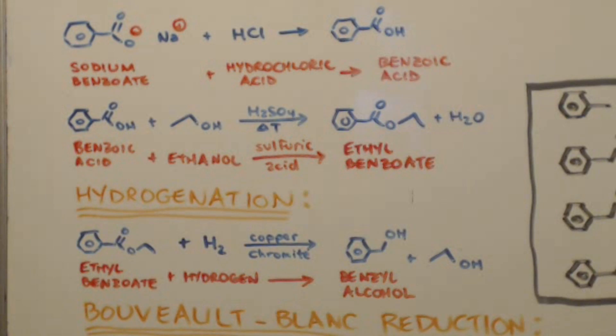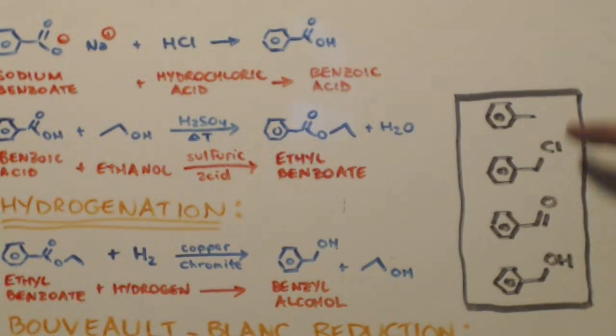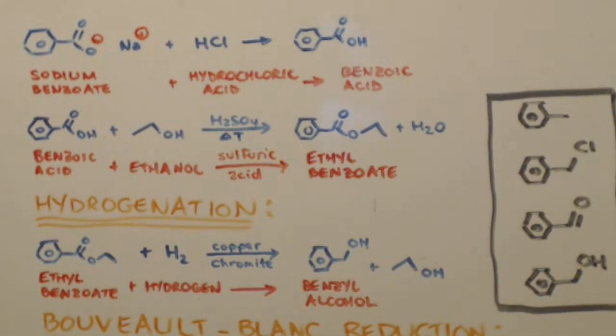You take your benzoic acid. You take some ethanol. A little bit of sulfuric acid. Heat it up for maybe two hours. And you'll have ethyl benzoate. Now that's your starting material to make one of these four chemicals.